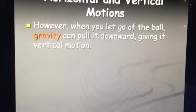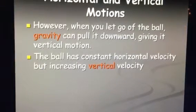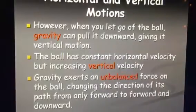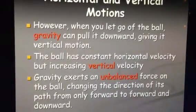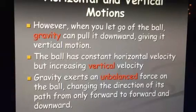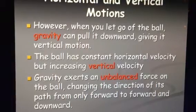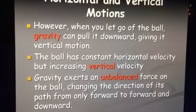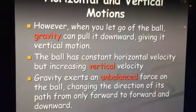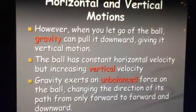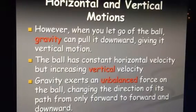However, when you let the ball go, gravity can pull it downward, giving it a vertical motion. The ball maintains a constant horizontal velocity while increasing its vertical velocity. This means gravity is an unbound force acting on this ball, changing its direction and path, and forming a forward and downward motion. When we talk about this, remember these forward motions — horizontal velocity and vertical velocity — we're talking about vectors.